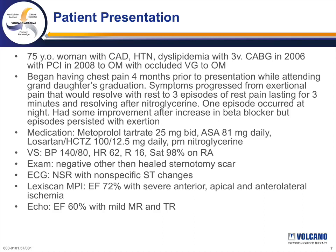On exam, her blood pressure was 140/80, heart rate 62, respiratory rate 16, and oxygen saturations were normal on room air. Physical exam was negative except for a healed sternotomy scar. Her EKG was nonspecific. Echocardiogram showed normal ejection fraction with mild valvular disease. She underwent a Lexiscan nuclear perfusion study showing normal ejection fraction with severe anterior, apical, and anterolateral ischemia.